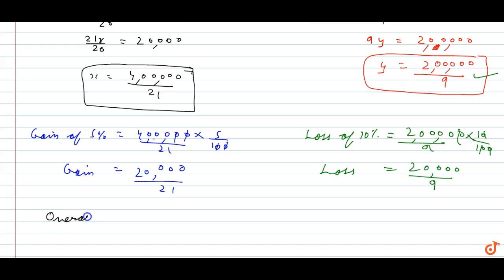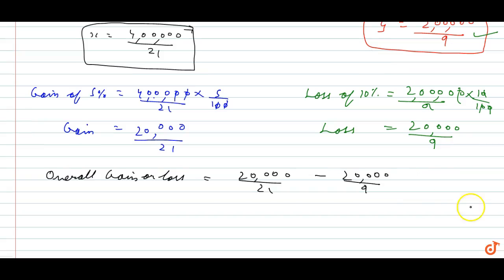Overall, overall gain or loss will be 20,000 upon 21 minus 20,000 upon 9. If I take out 1 by 3 common, this becomes 20,000 upon 7 minus 20,000 upon 3. Taking out 20,000 upon 3 common.